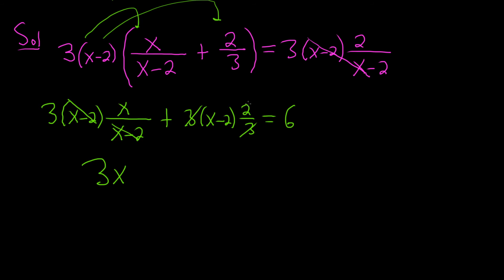So now we can distribute. 2 times x is 2x, and 2 times negative 2 is negative 4. And this is equal to 6.